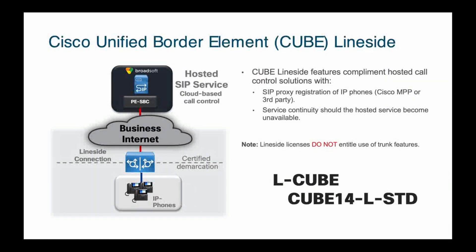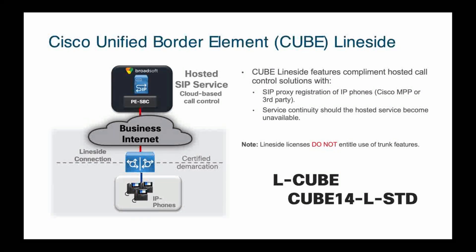Finally, we have the Unified Border Element line-side license. This is for IP phones that register to a SIP proxy out in the public SIP service provider space. If their registration is proxied through a CUBE, you may be able to offer some survivability features. Your architecture will dictate this and give you that additional functionality if it is needed.